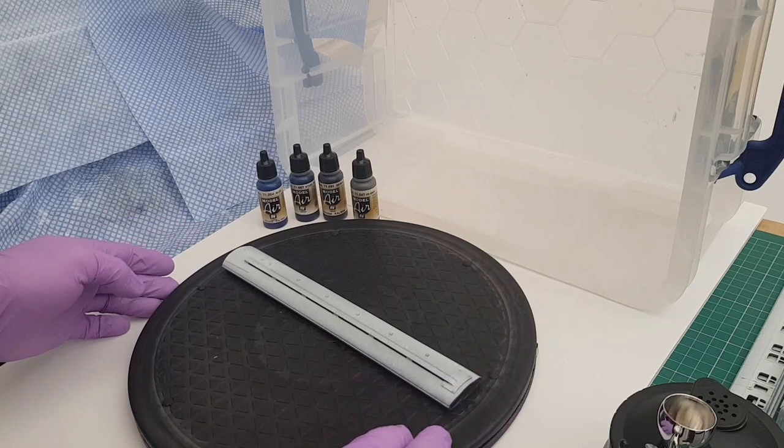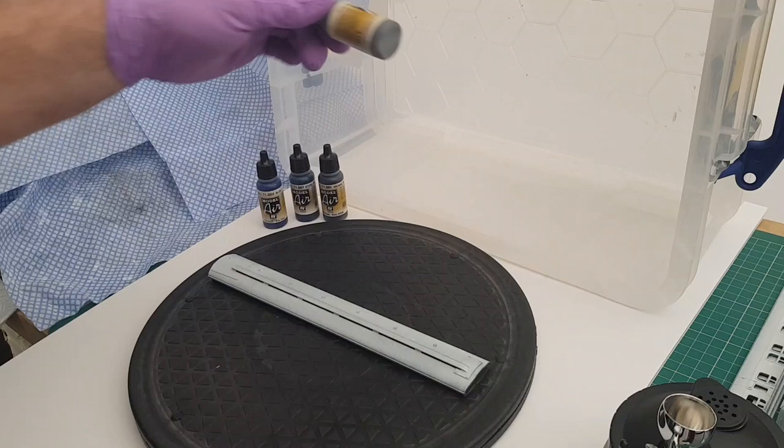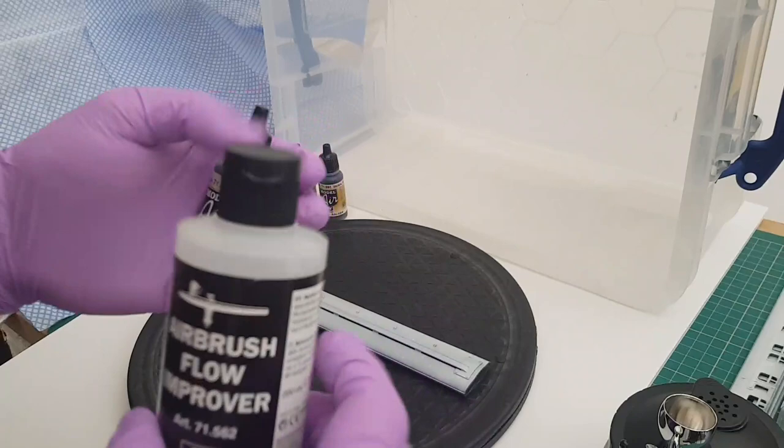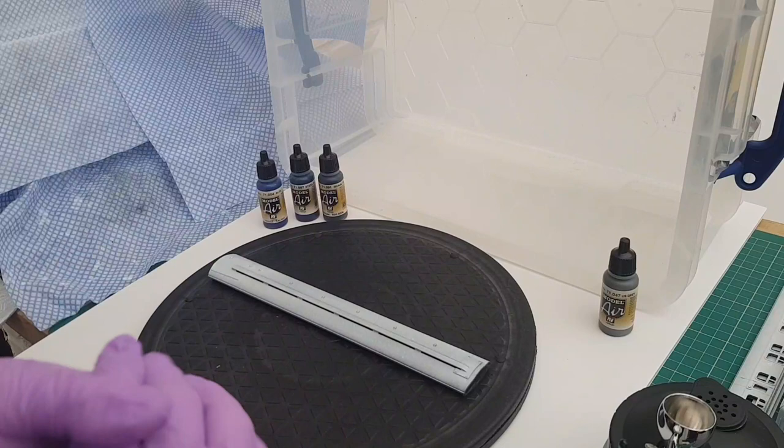But first thing I'm going to do is mix up the color with some airbrush flow improver. It should help to stop the tip dry. However, I'm no good at spraying so it may just happen anyway. But we'll come back in a second and we'll give it a go.